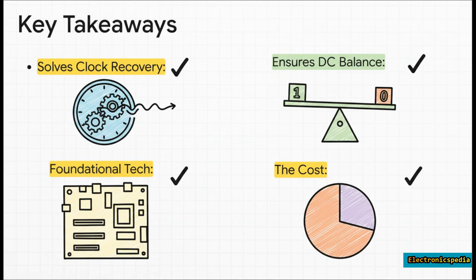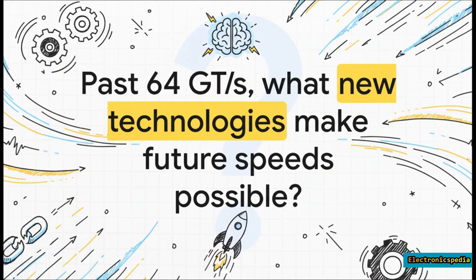So what are the big things to remember? At its heart, 8B/10B encoding was a brilliant fix for two major physics headaches in high-speed communication: keeping the clock in sync and maintaining DC balance. It was the foundational tech that made the first wave of things like PCIe, SATA, and USB 3.0 even possible, with the only real price being that 20% hit to bandwidth. 8B/10B encoding was a masterpiece of engineering for its day — it solved these huge physical problems with pure elegant logic. But the demand for more speed never stops, which means the hunt for the next brilliant, even more efficient solution is always on.